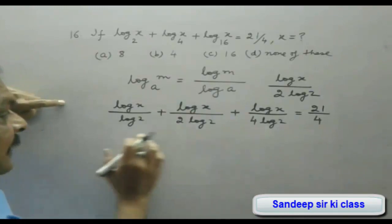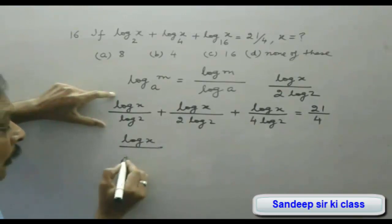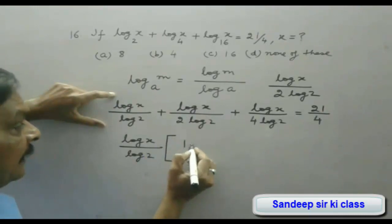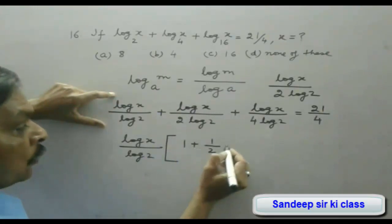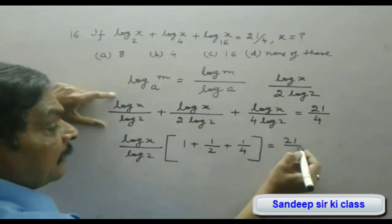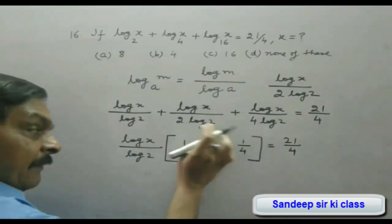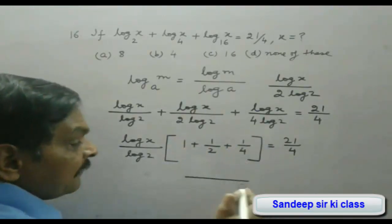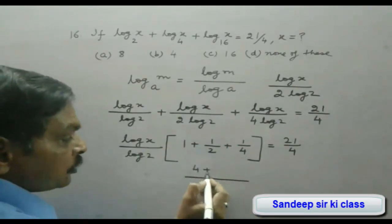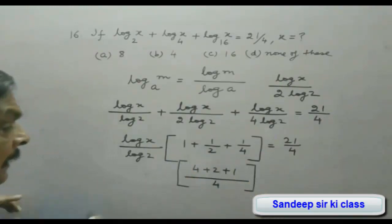From the left-hand side we can take log x upon log 2 as common, giving: (log x / log 2) × (1 + 1/2 + 1/4) = 21/4. Finding the LCM of 4 in the bracket, the numerator becomes 4 + 2 + 1.